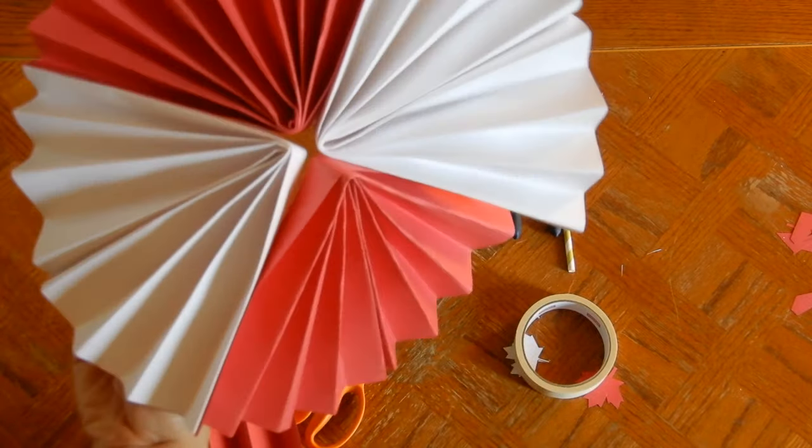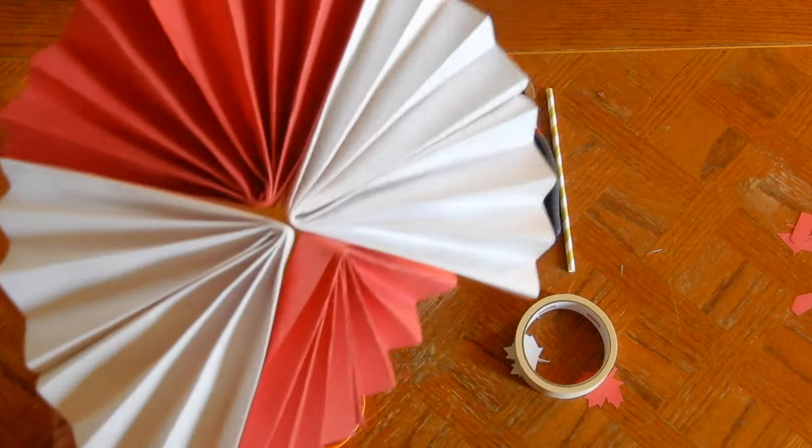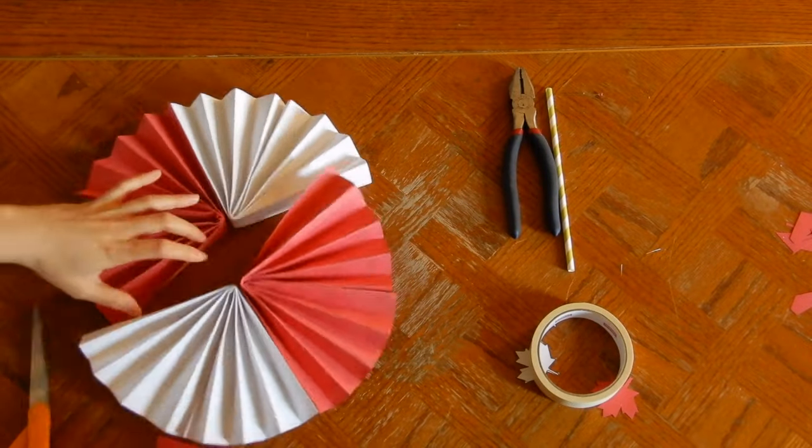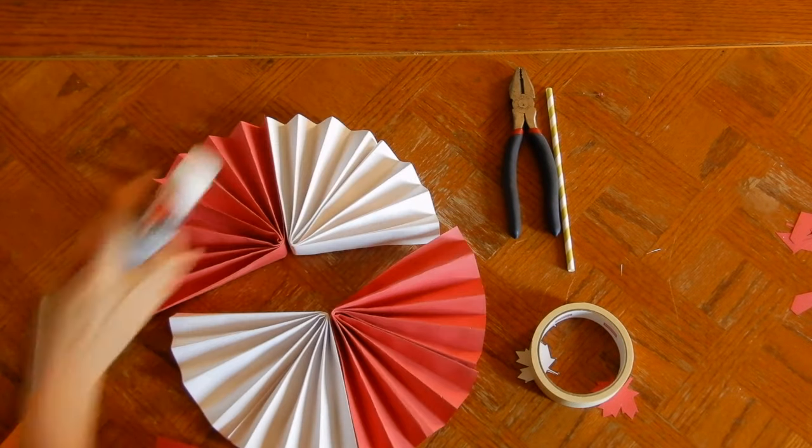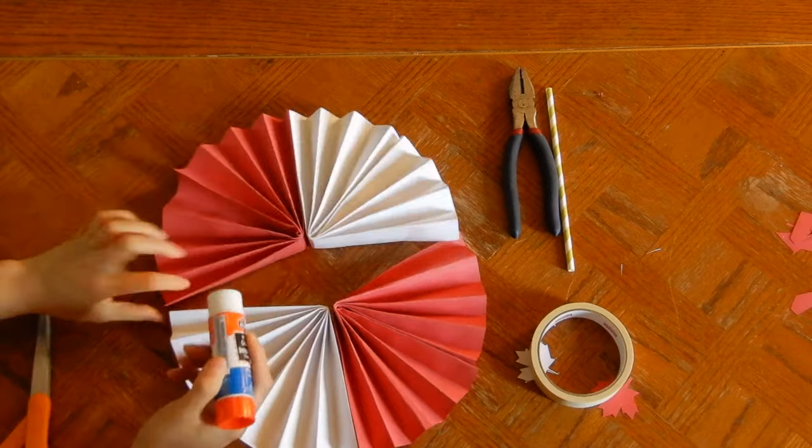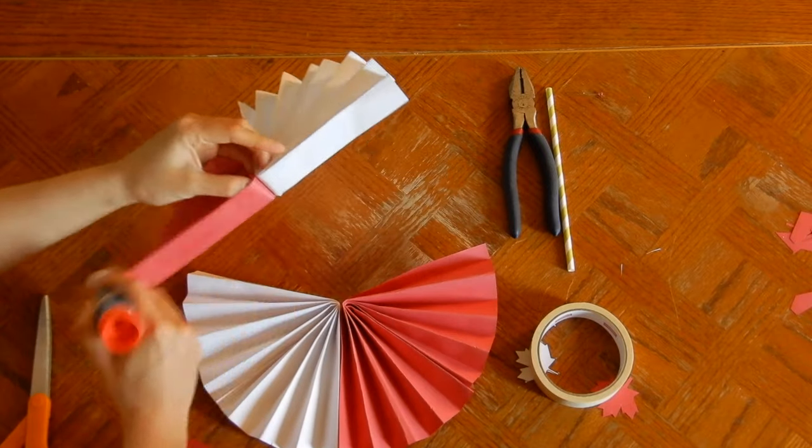So once you're done both halves, you can either have it whichever way you'd like to flip it. So I'm going to do red, white, red, white, and I'm just going to glue the two halves together.